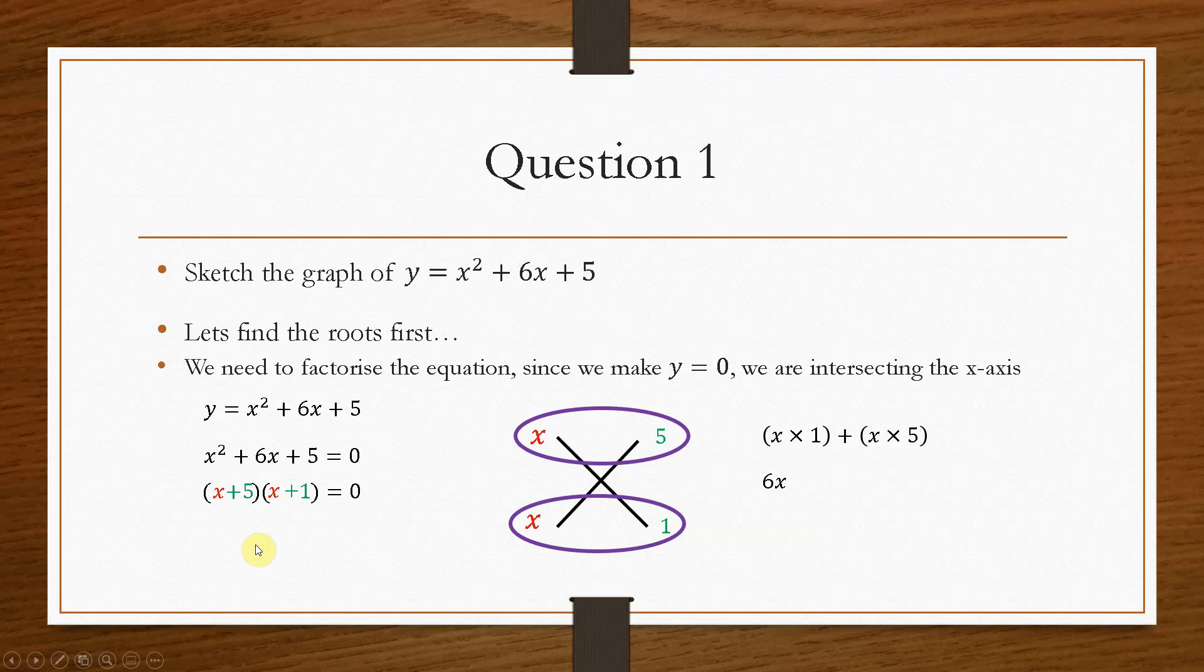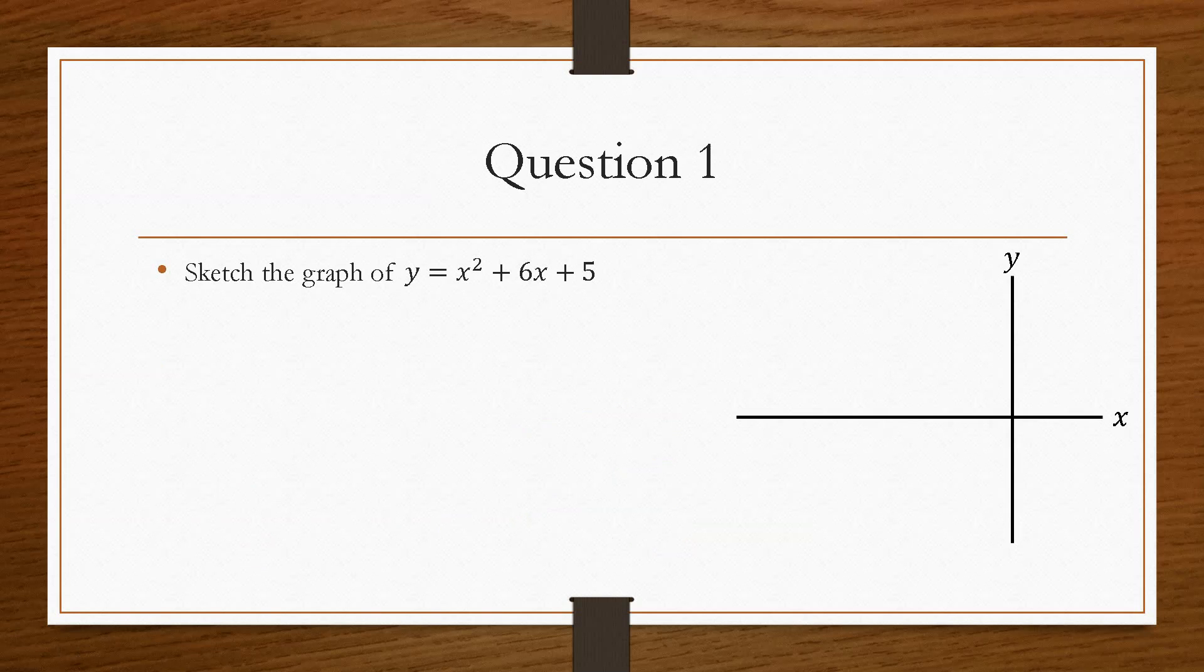So we get x plus 5, bracket x plus 1. Now, if we make them individually equal 0, we can get our two values of x for the roots. So if we plot these, then, of course, both of these points will have a y value of 0. So that is our roots in place.